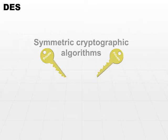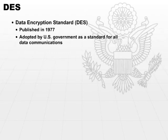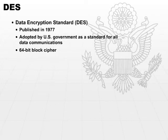One of the first standards was DES, the Data Encryption Standard. It was published in 1977, and it was adopted by the U.S. government as a standard for all data communications. This is a block cipher — it uses 64-bit blocks, so the input is going to be chopped up into 64-bit blocks. And the key is a 56-bit key.